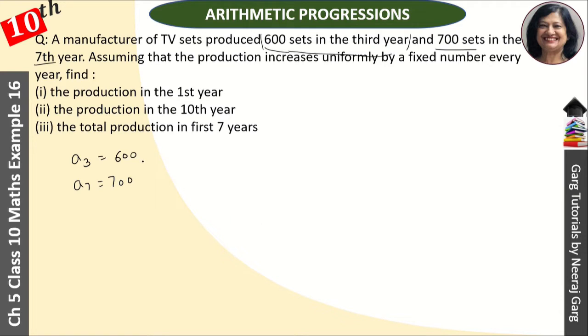Now let's see what the a₃ formula is. The aₙ formula is a + (n - 1)d. So a₃ = a + 2d = 600. And a₇ = a + 6d = 700. This is the first equation and this is our second equation.